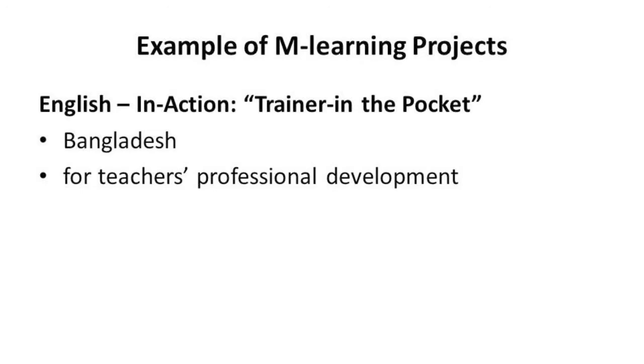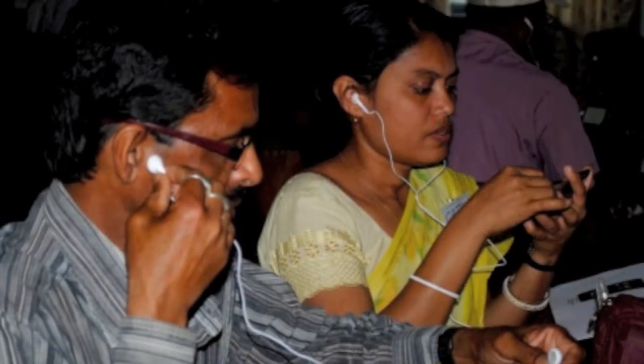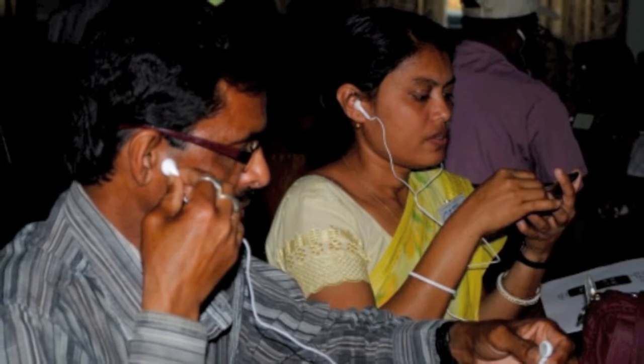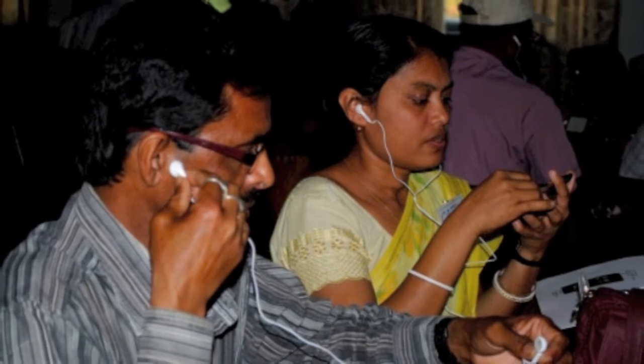Another example is the English in Action 'Trainer in the Pocket' project in Bangladesh. This is a nine-year program which will provide professional development to 75,000 teachers by 2017. The 'Trainer in Your Pocket,' as it is called, is one of the mobile devices used to provide teachers with professional development opportunities and thereby promote the goals of the English in Action project in Bangladesh. It is funded by DFID in Great Britain. During the pilot phase an iPod was used, but currently they are using a low-cost mobile phone which contains a range of teacher professional development materials including video and audio, accessible anywhere and at any time.